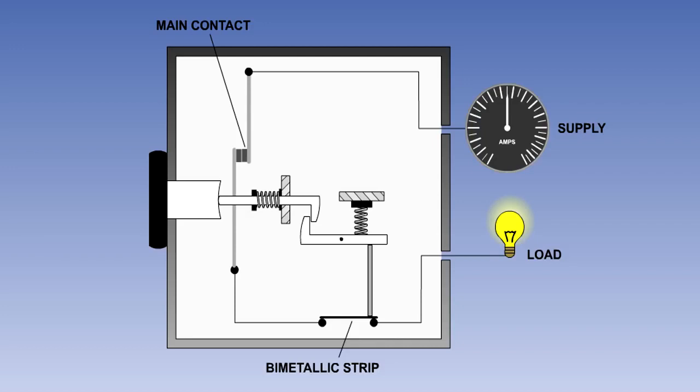With the circuit breaker in the closed position, current flows through the main contacts, through the bimetallic strip and onto the load.